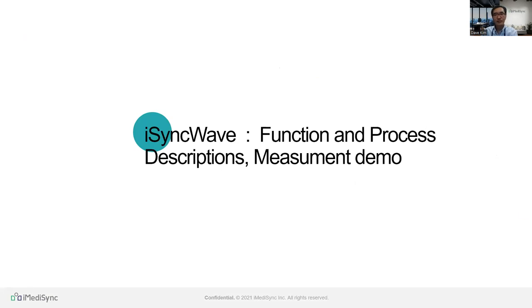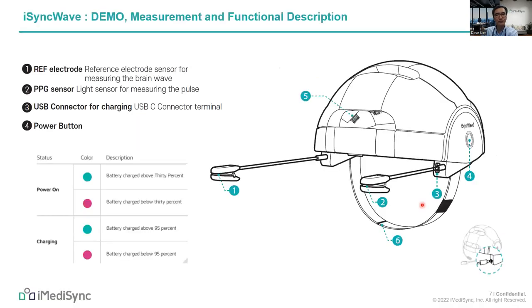As the first part of today's topic, I'd like to describe the standard process for iSYNC WAVE measurement with some prerequisite information and give an iSYNC WAVE quick, easy measurement demo. The first step is to describe the function of each part of the iSYNC WAVE device. Number one is the reference electrode, which is the common electronic reference for measuring 19-channel EEG as a voltage signal. Number two is the PPG sensor, which measures heart rhythm simultaneously with 19-channel EEG.